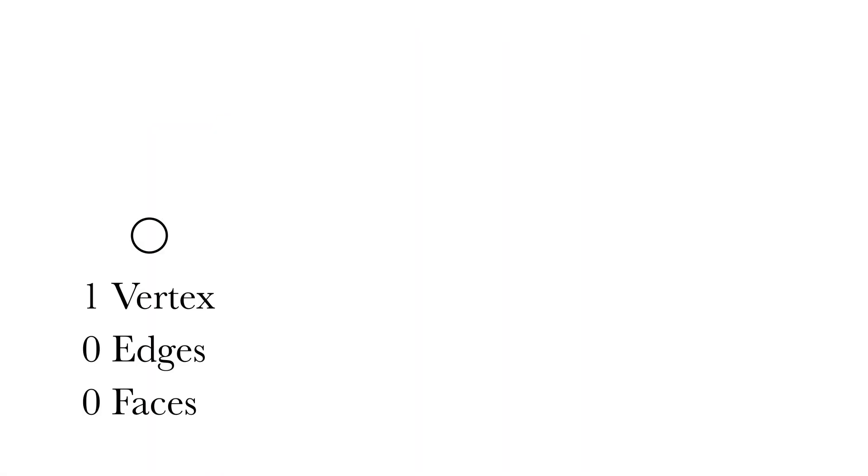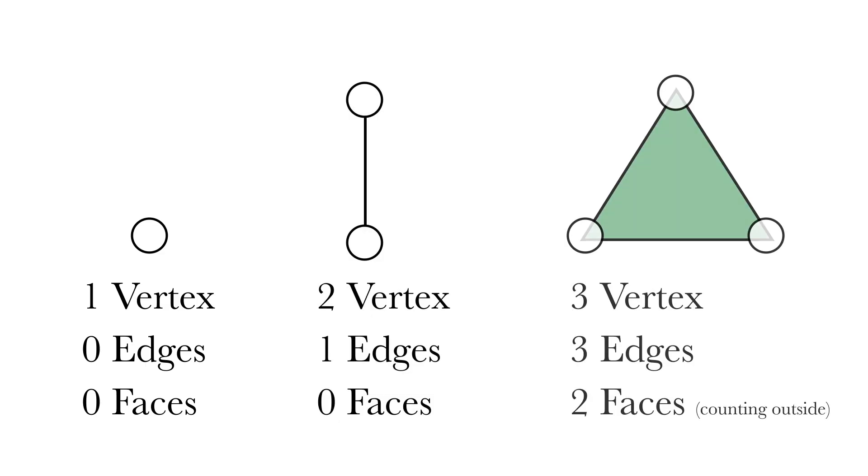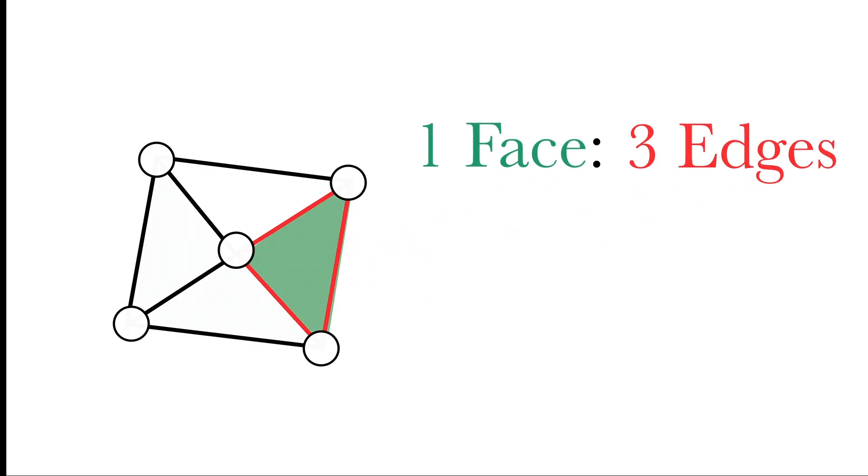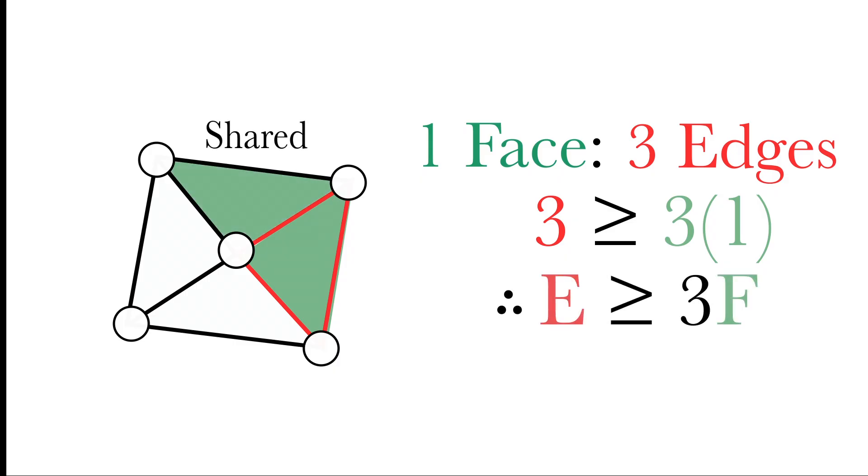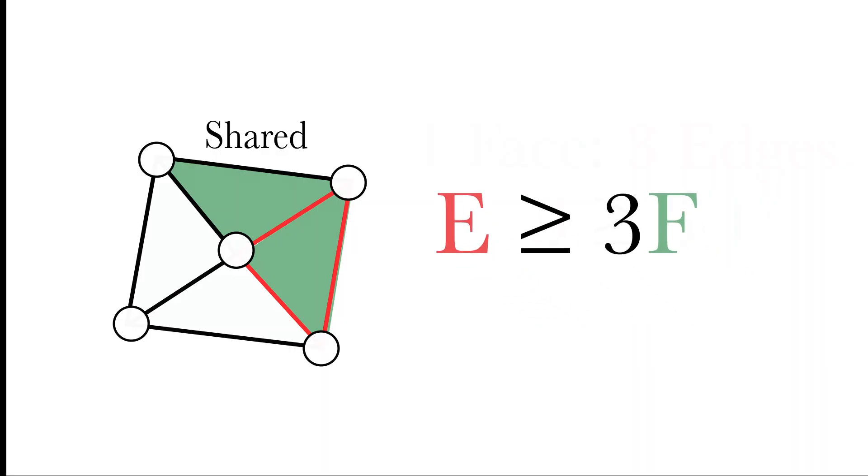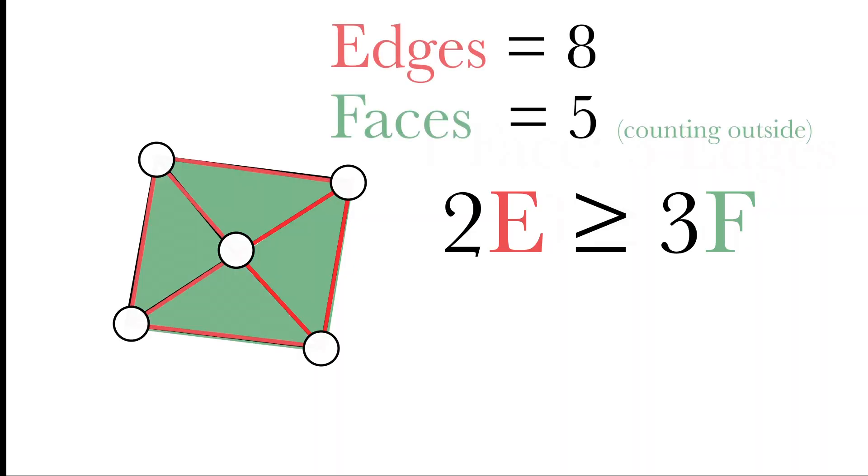First of all, planar graphs with one or two vertices can't have faces. Only graphs with three vertices or more can have a face. So let's draw an arbitrary graph with more than three vertices. As you can see, for every face on the graph, you have at least 3F edges. But notice that each edge is shared between two faces. So we can write 3F will always be less than or equal to 2E. To verify this, plug in the number of faces and edges, giving us 15 is less than 16.